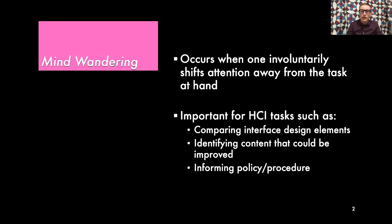In this paper, we were curious about mind-wandering and its role in human-computer interaction. Mind-wandering occurs when one involuntarily shifts attention away from the task at hand, and this is very important for many types of HCI tasks. For example, comparing interface design elements to see what might reduce mind-wandering, identifying educational content that causes students to mind-wander, or informing policy for inserting breaks on attention-critical tasks. All of these rely on being able to measure mind-wandering.